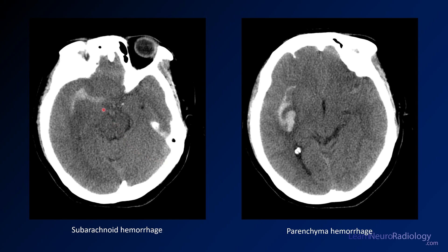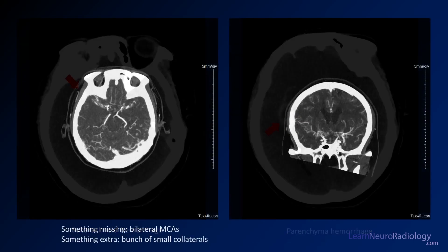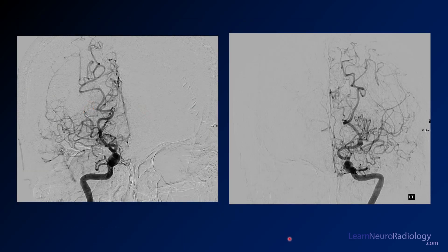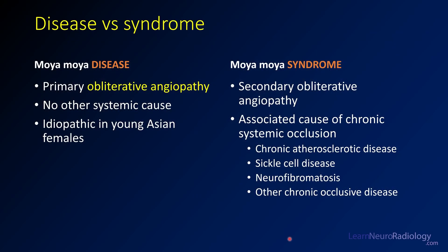Recapping the case: subarachnoid hemorrhage in the Sylvian fissures and a small parenchymal hemorrhage. The bilateral MCAs are missing on these images — you just see a bunch of small collaterals, the 'puff of smoke,' with missing MCAs. Moyamoya disease is the primary obliterative angiopathy, typically idiopathic in young Asian females. Moyamoya syndrome is secondary and can be associated with neurofibromatosis, atherosclerotic disease, sickle cell disease, and other chronic occlusive diseases.